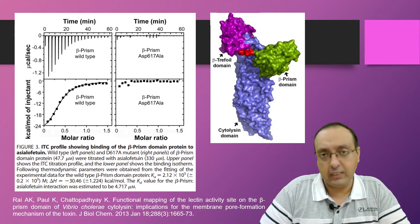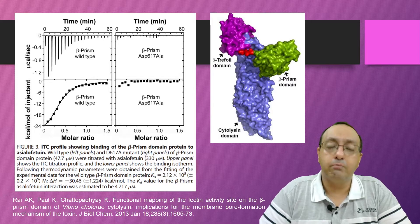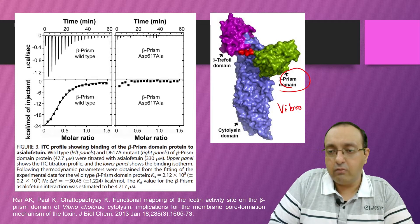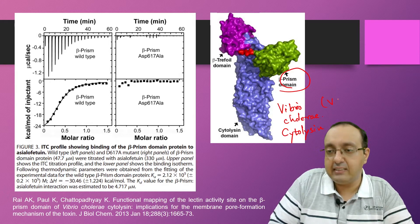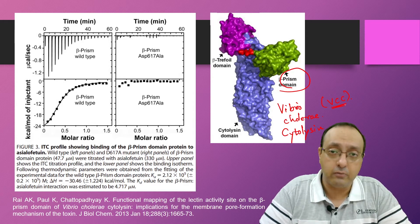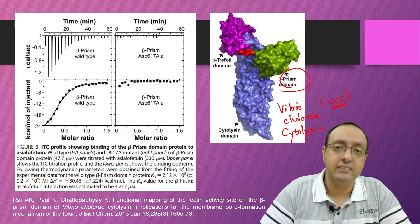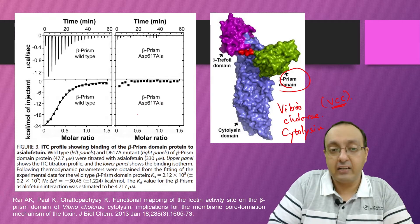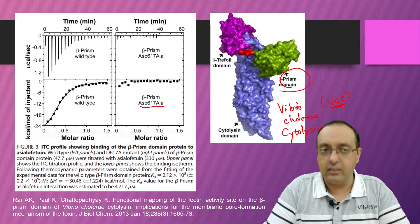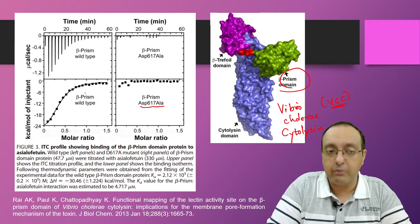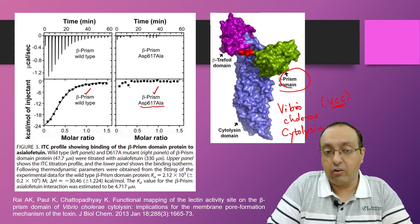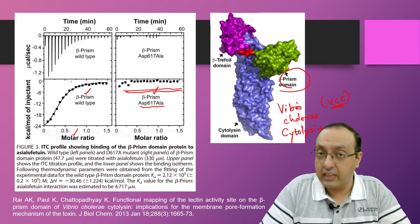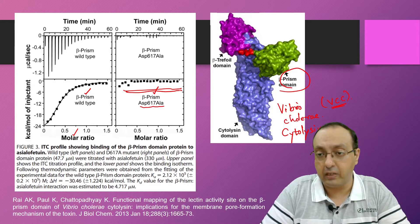Here I want to point out two studies where they use ITC to describe and measure protein-ligand interactions. In this first study we have the ITC profile of the beta prism domain of the Vibrio cholerae cytolysin protein or VCC. It is a beta barrel pore-forming protein and one of the activities of this protein is that it is acting as a lectin. So it is a carbohydrate binding protein and one of the residues which was important for binding the lectin is the aspartate 617. In this study, the researchers measured the ITC profiles of the wild type beta prism domain and the mutated beta prism domain, and you can see that the interaction basically vanishes when they use the mutant version. Here they can get nice molar ratio as well as KD and the delta H from this data.